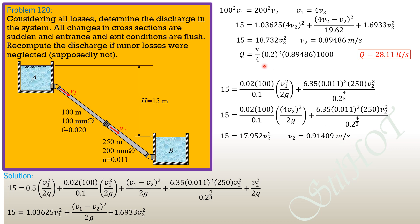Then the discharge, ignoring minor losses is pi over 4 times 0.2 square times 0.91409 times 1000. So the discharge is equal to 28.72 liters per second. So there's a lesser change increase but this is the more accurate one because we consider losses and we should not ignore it, although the change is very small or minimal.